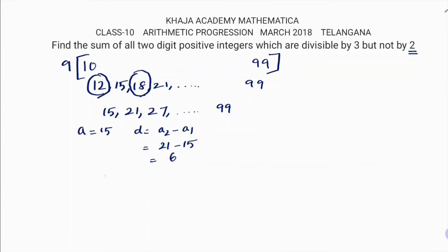Now how many terms are there? We need to check first. So aₙ equals 99, and aₙ value is a plus (n-1)d equals 99. A value is 15 plus (n-1) times d value 6 equals 99. So 15 plus 6n minus 6 is 99. 15 minus 6 is 9 plus 6n is 99. 6n equals 99 minus 9, 6n equals 90, n equals 90 by 6 which is nothing but 15. So there are 15 terms.